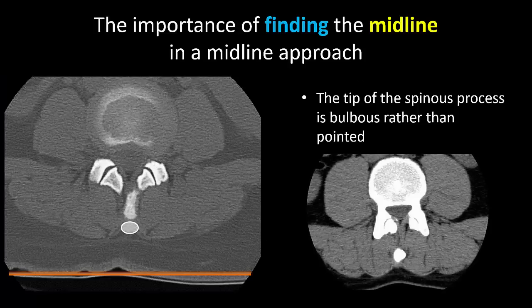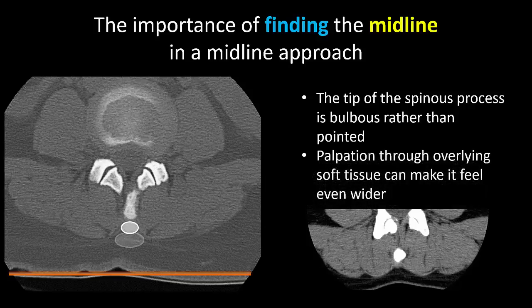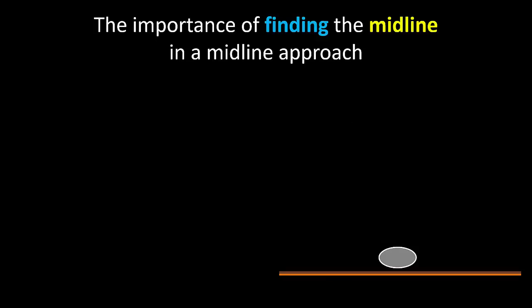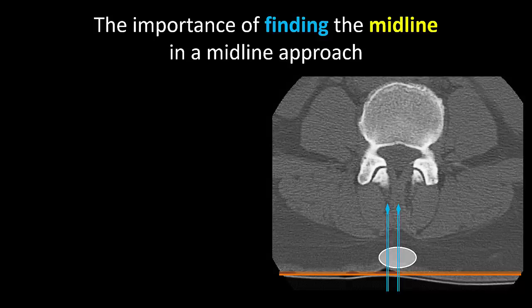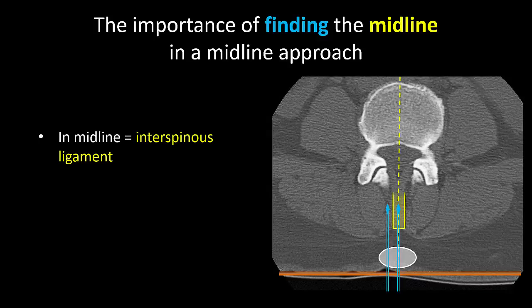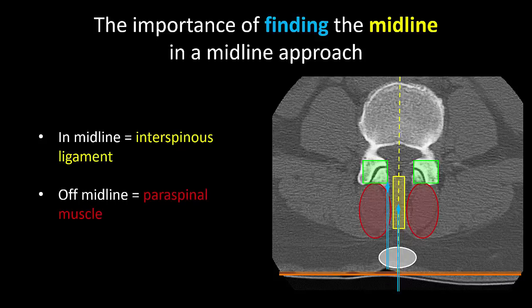Finding the midline requires accuracy. The tip of the spinous process is wider than you think — about three millimeters on average — and the overlying soft tissue makes it feel even wider. In older people, degenerative calcification of the supraspinous ligament can further widen the apparent tip. If we are in the true midline, we will have placed our needle into the interspinous ligament. If we are off the midline, the needle will be in the adjacent paraspinal muscle and further progress will be impeded by the laminar or articular processes.